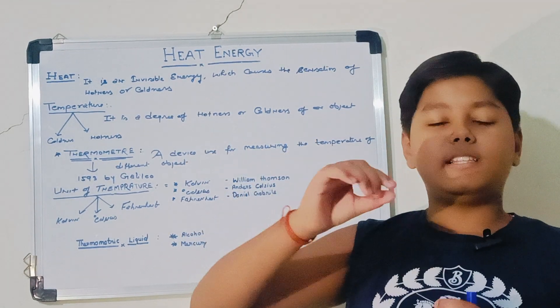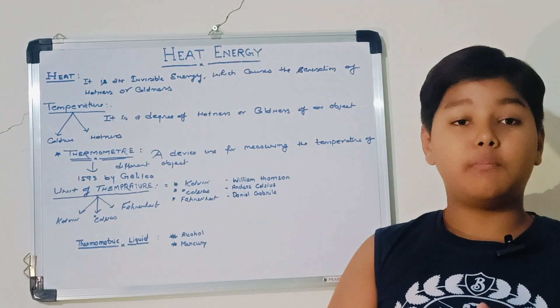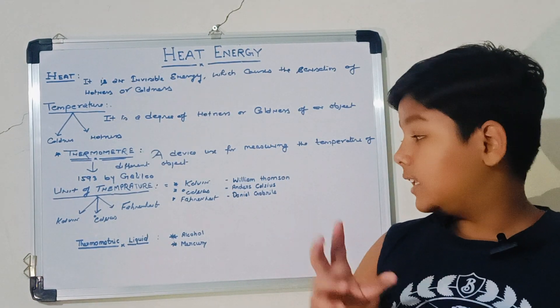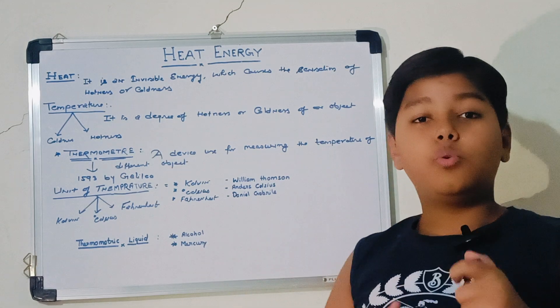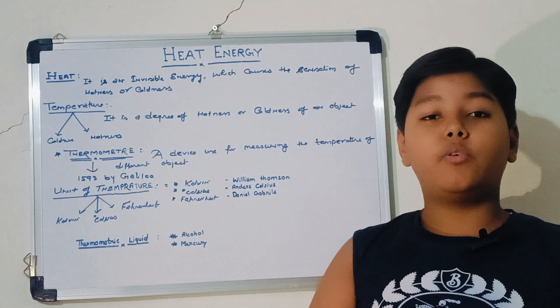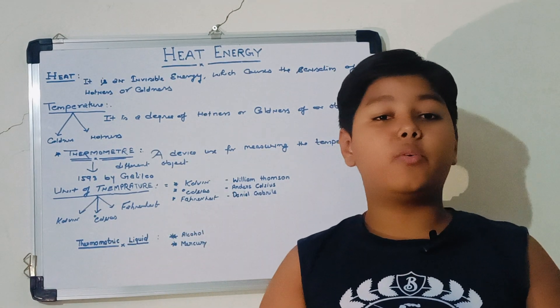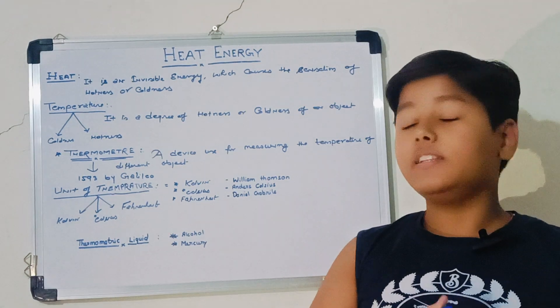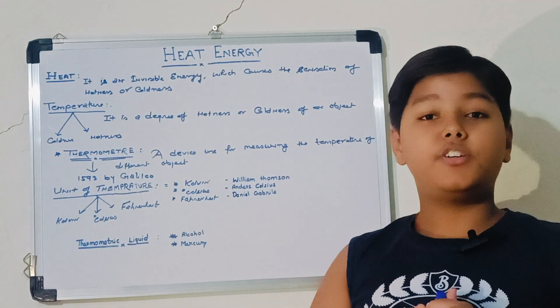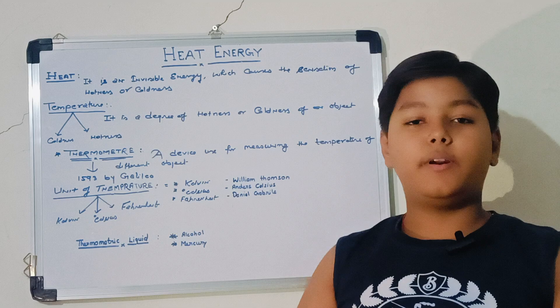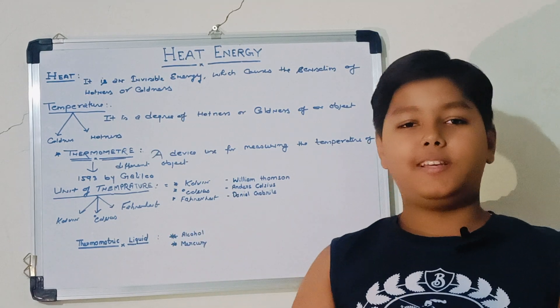Next, if you see a thermometer, there is a fluid kind of thing in the thermometer. So what are they? Mainly there are two kinds of thermometric liquids. What are thermometric liquids? The liquids which are filled in thermometers are called thermometric liquids. There are mainly two thermometric liquids: alcohol and mercury. Thank you.